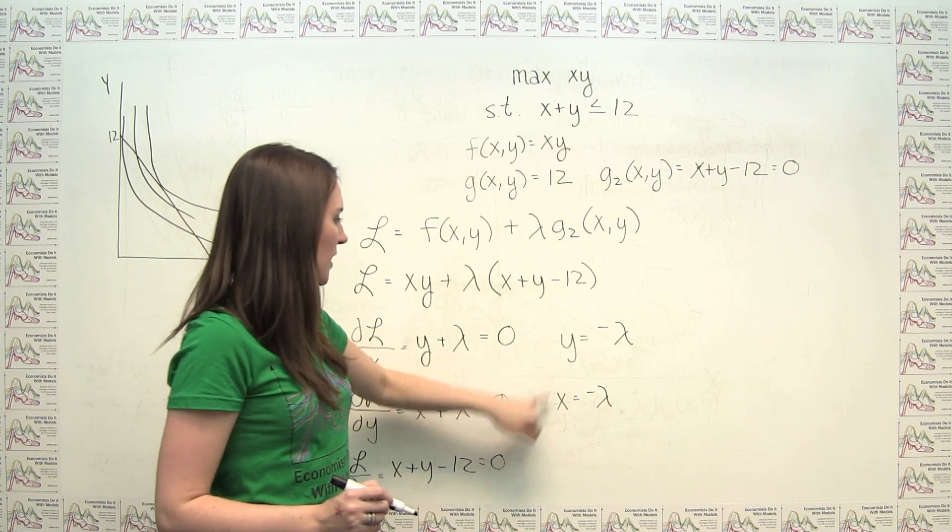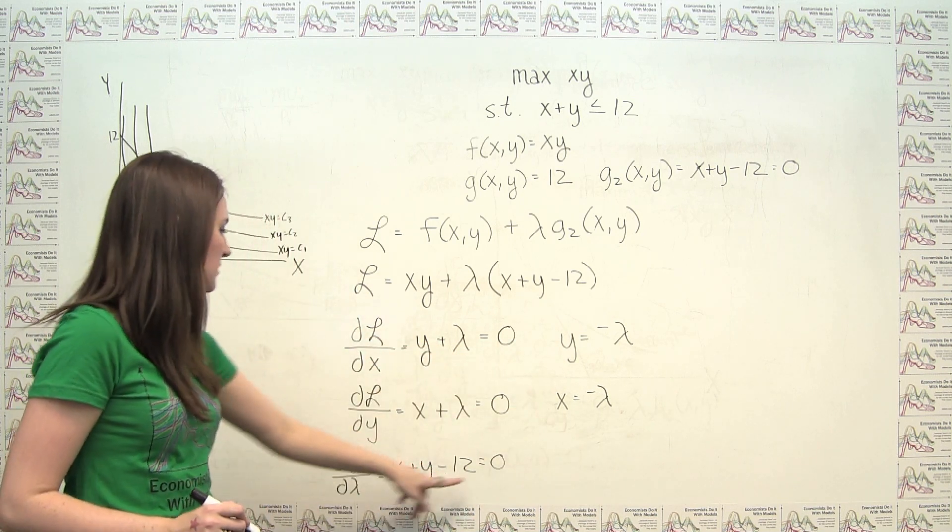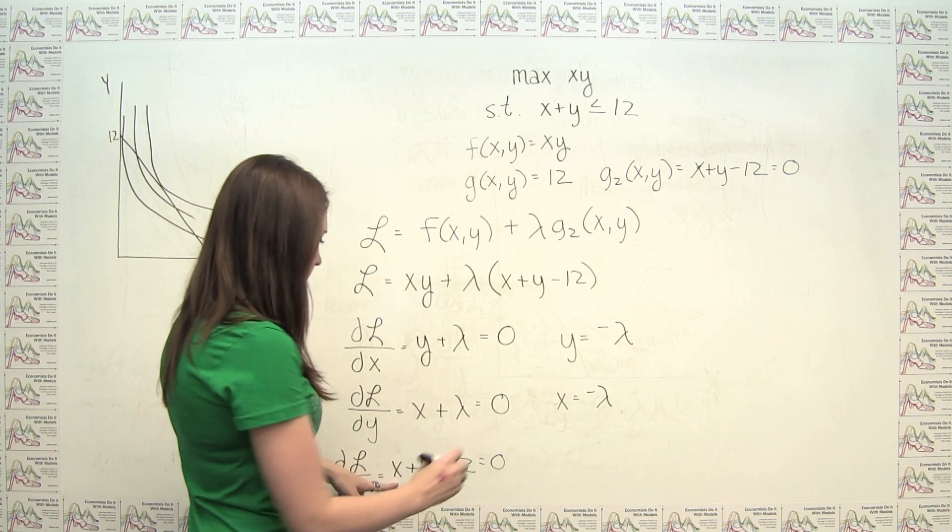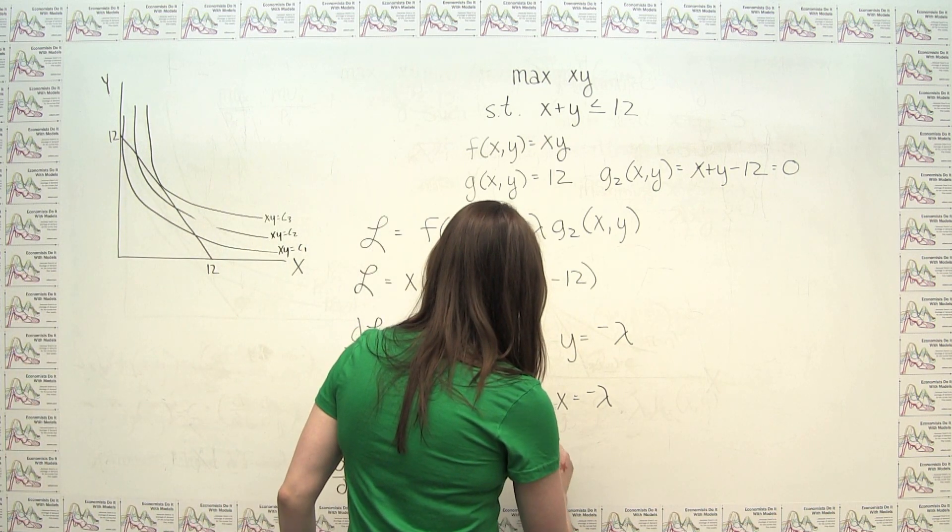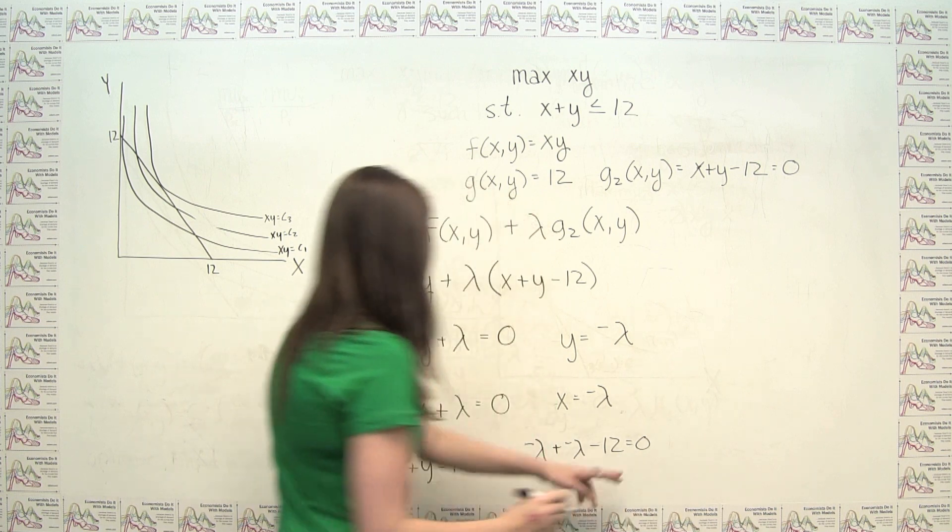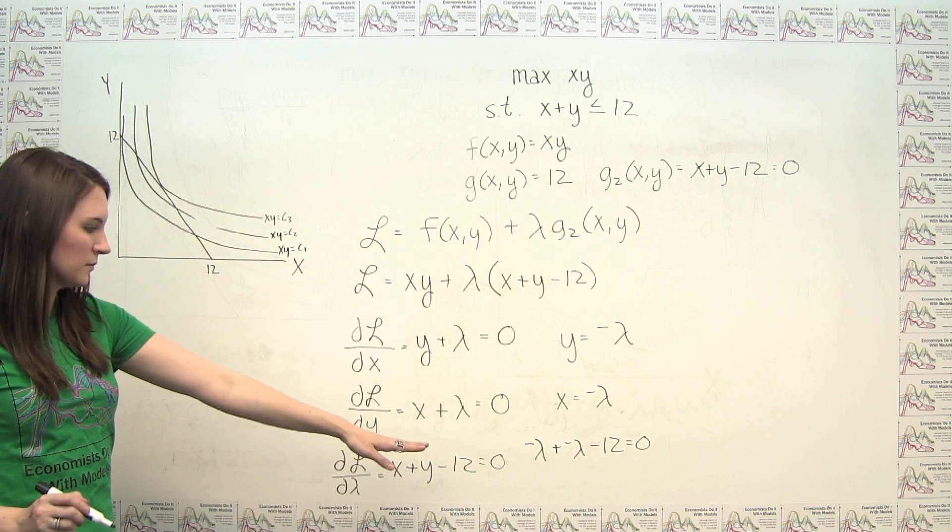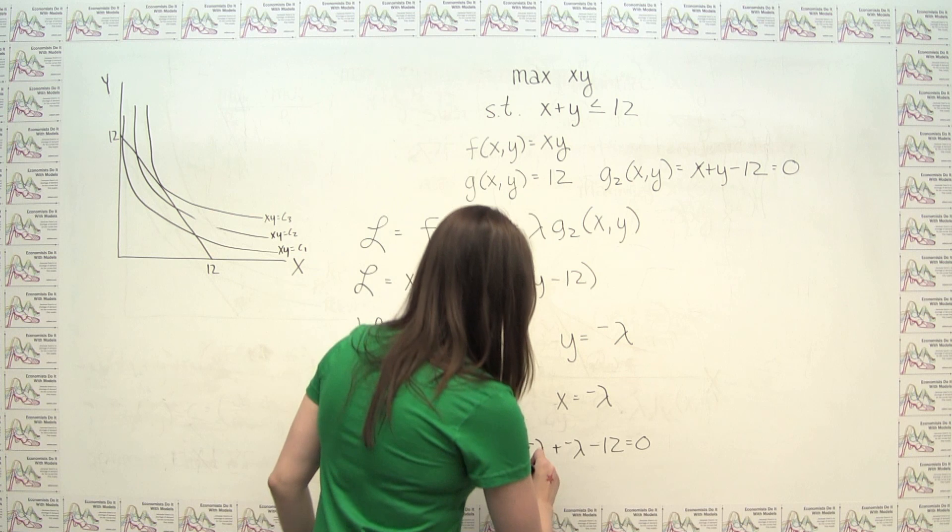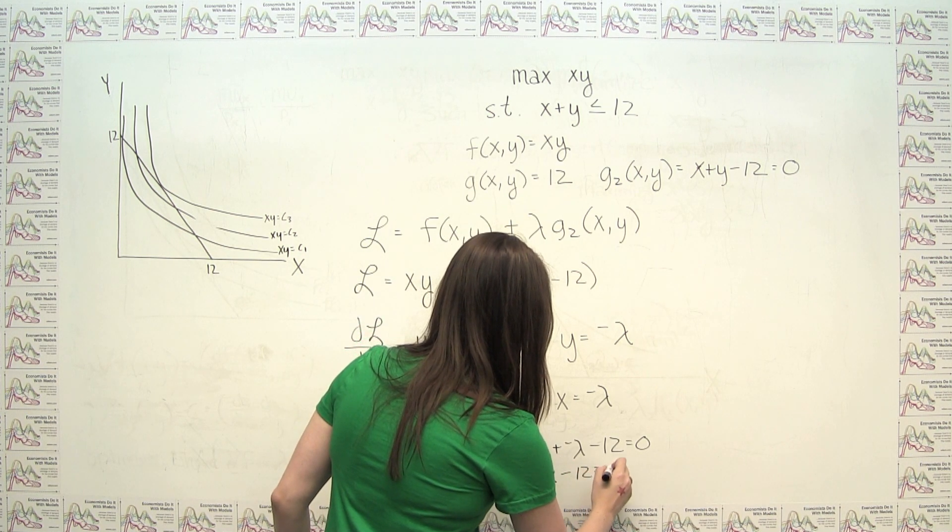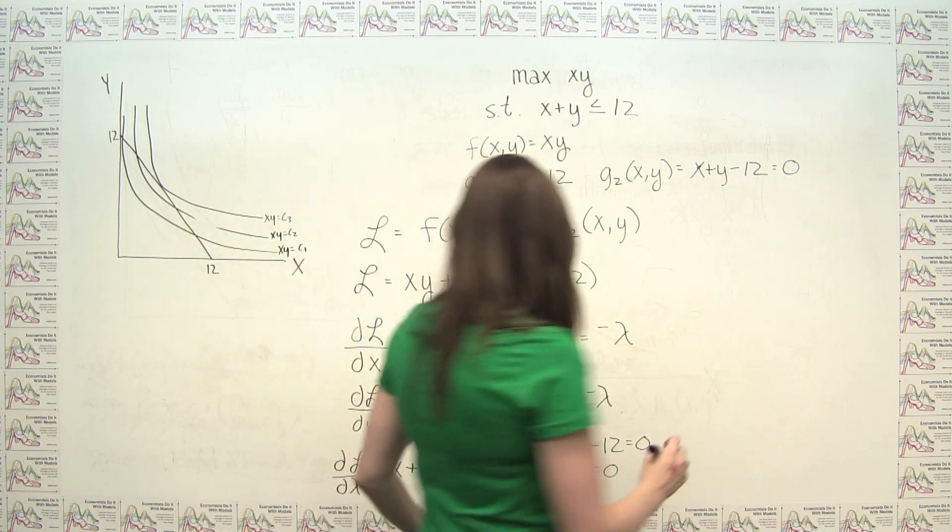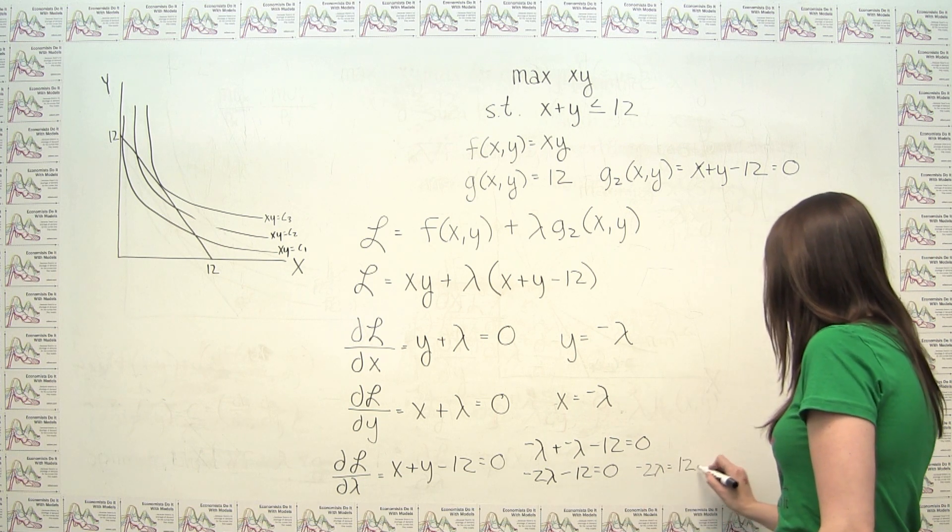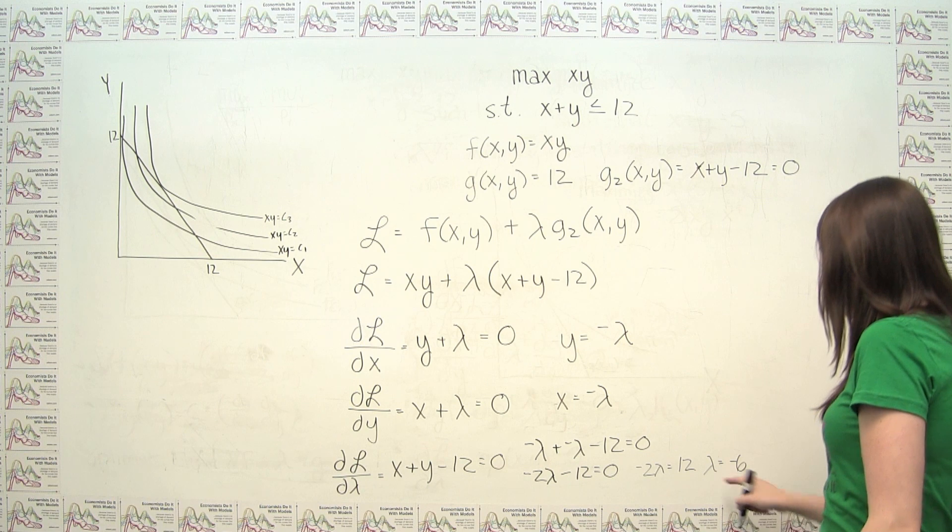And then we could plug in for x and y here to get something only in terms of lambda that we can solve. And we'll notice here that if we plug in for x and y, we get negative lambda plus negative lambda minus 12 is equal to zero. Or that's just going to be negative 2 lambda minus 12 equals zero. Or negative 2 lambda equals 12, lambda equals negative 6.